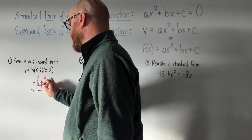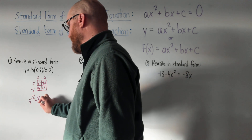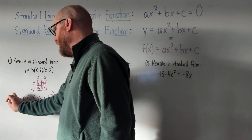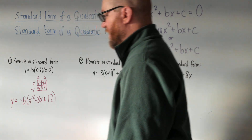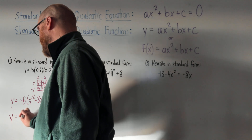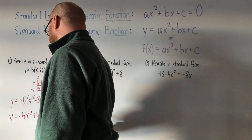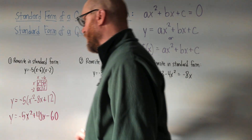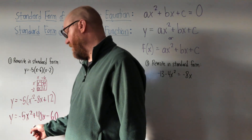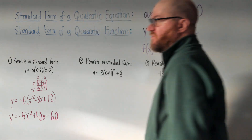Multiplying x minus 6 and x minus 2 gives us x squared minus 8x plus 12. That negative 5 is still floating out there, so let's distribute it. We get y equals negative 5x squared plus 40x minus 60. That's in standard form — x squared is the first term with a number up front, x is the second term with a number up front, and the constant is at the end.